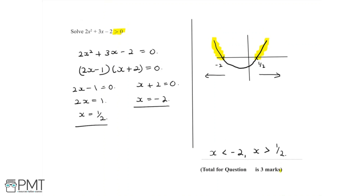This question is worth three marks. The first mark is for factorising 2x squared plus 3x minus 2 to get 2x minus 1 multiplied by x plus 2. The second mark is for finding the two solutions as minus 2 and a half. The third and final mark is for stating that x is less than minus 2 and x is more than a half.